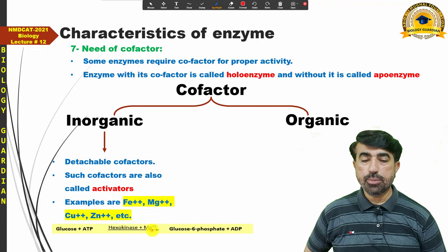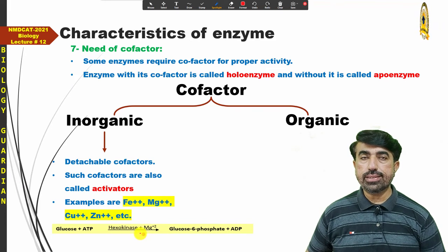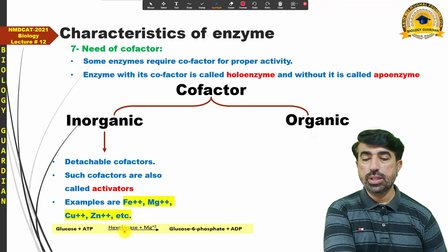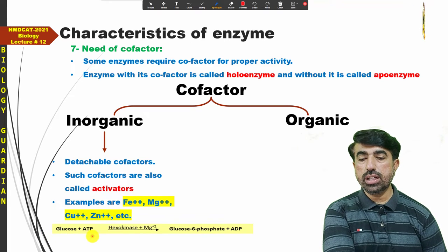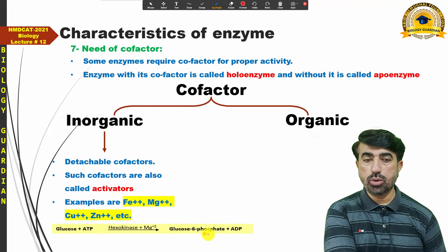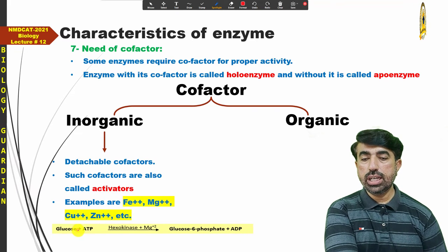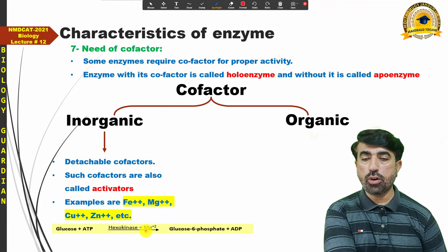An example of an enzyme using an inorganic co-factor is hexokinase. Hexokinase has magnesium ions participating as co-factors. In the first reaction of glycolysis, hexokinase transfers a phosphate group from ATP to glucose, forming glucose-6-phosphate, while ATP becomes ADP. This enzyme requires magnesium ions as its co-factor.